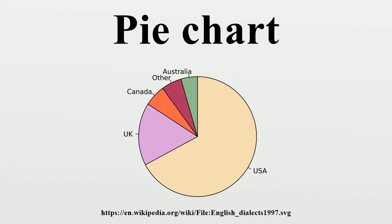A pie chart is a circular statistical graphic, which is divided into slices to illustrate numerical proportion. In a pie chart, the arc length of each slice is proportional to the quantity it represents. While it is named for its resemblance to a pie which has been sliced, there are variations on the way it can be presented.